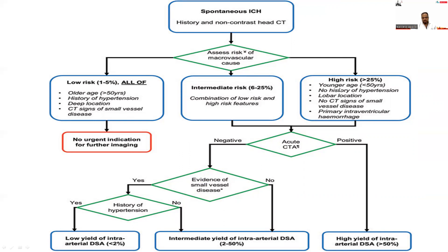High-risk features include younger age group, no history of hypertension, lobar location, no CT signs of small vessel disease, and primary intraventricular hemorrhage. High and intermediate risk patients should undergo CT angiography. If CT angiography is positive, there is a high likelihood that digital subtraction angiography (DSA) will also be positive — more than 50%. If CT angiography is negative but there is no evidence of small vessel disease and no history of hypertension, there is an intermediate possibility of a positive intra-arterial DSA, up to 50%.